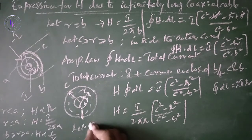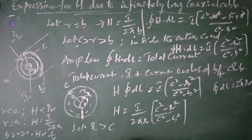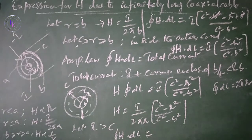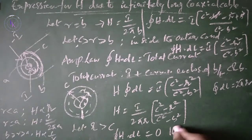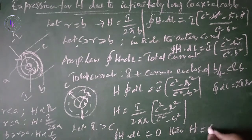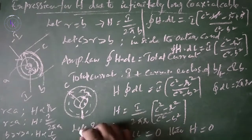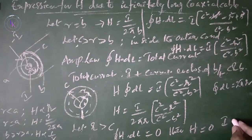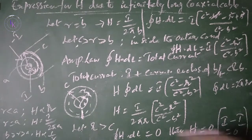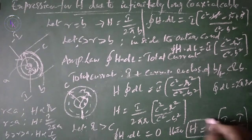For the region r greater than c, which is outside the coaxial cable, H equals 0. This is because the total current enclosed is the inner cable's positive I plus the outer cable's negative I, which equals zero. So the magnetic field intensity H equals 0 outside the coaxial cable.